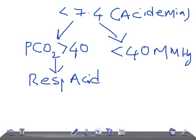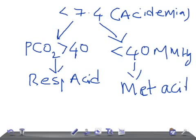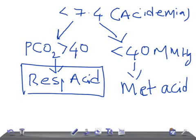If the PCO2 is less than 40 mmHg, it means PCO2 is not responsible for the acidemia. The acidemia is caused by something other than PCO2, which is why we call it metabolic acidosis. Increasing PCO2 lowers pH and causes acidemia; if PCO2 is low, the acidemia must be metabolic in origin.